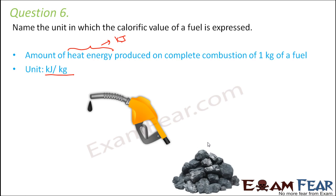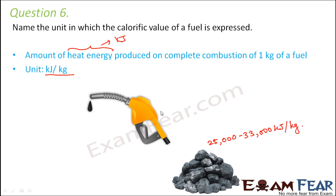Looking at the calorific values of various fuels: for coal, the calorific value is around 25,000 to 33,000 kilojoules per kg. For petrol, it is 45,000 kilojoules per kg — meaning on complete combustion of 1 kg of petrol, 45,000 kilojoules of heat energy will be produced.